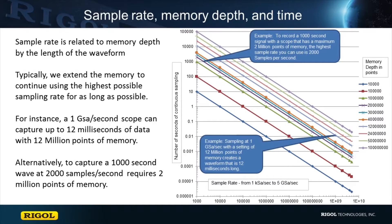Sample rate is the speed at which the voltage level of a signal is captured by the analog to digital converter inside the scope. Sample rate and memory depth in an oscilloscope are closely related to the length of the waveform in time you capture.